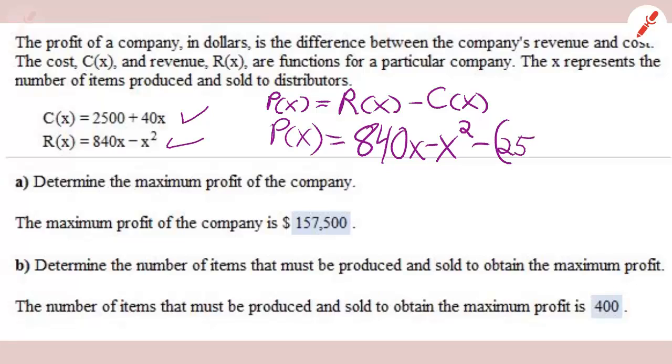And what we want to do is determine not just the profit, but the maximum profit. So the first thing we have to do is figure out the profit function. Profit is going to equal revenue minus cost. So here we've got revenue and we're subtracting cost. And we're going to calculate that.